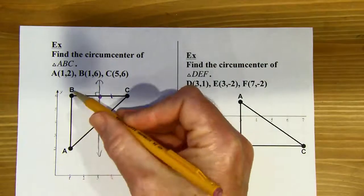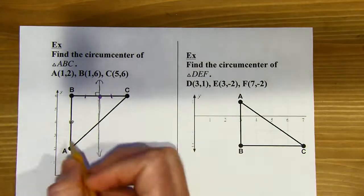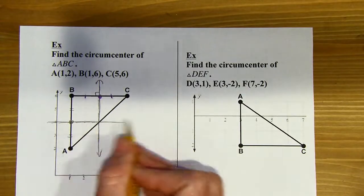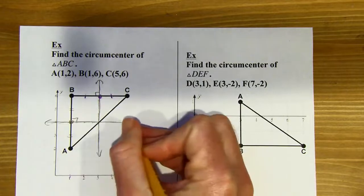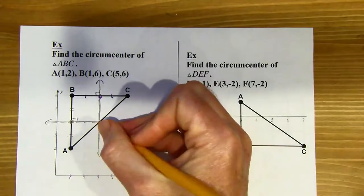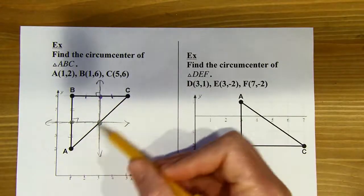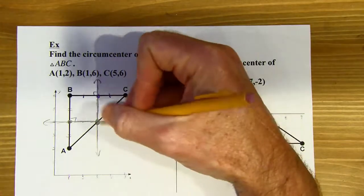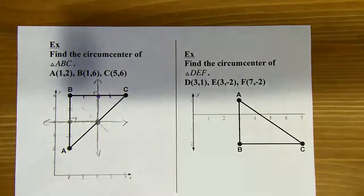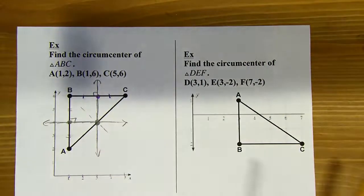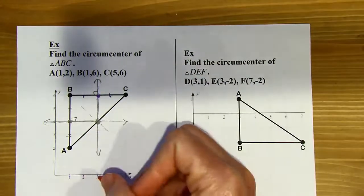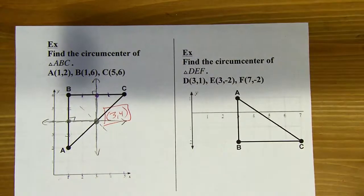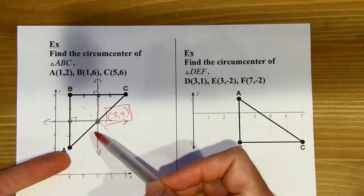Now that I've drawn those carefully, I can see where they meet. That sure looks like the midpoint of the hypotenuse — and it actually is. So I've found the circumcenter. I could draw in the third perpendicular bisector, but I don't really need to because I already know they're going to meet right there. The circumcenter is the point (3, 4). A little shortcut: if you have a right triangle, you can just find the midpoint of the hypotenuse — it's always going to be the circumcenter.